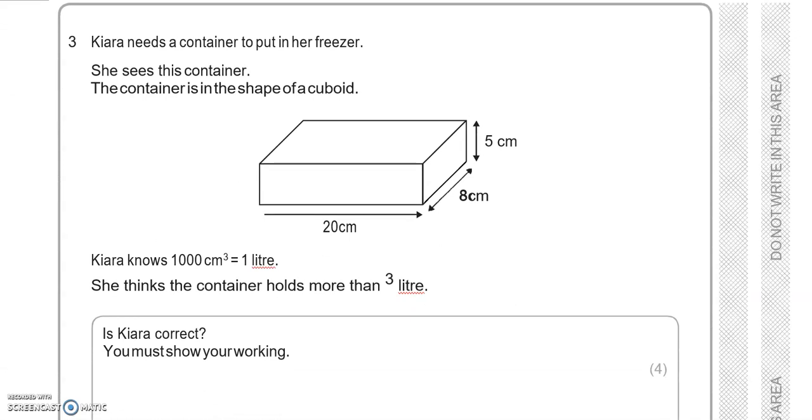Kiera needs a container to put in her freezer. She sees this container. The container is in the shape of a cuboid. Kiera knows 1000 cubic centimetres equals 1 litre. She thinks the container holds more than 3 quarters of a litre. Is Kiera correct? You must show your working. So let's have a look.